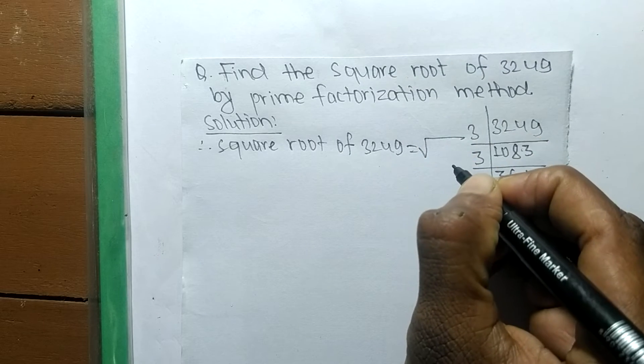We have taken out the prime factors. Now we have to find its square root. So square root of 3249 is equal to, this is the sign of square root, and we are finding here square root of 3249.